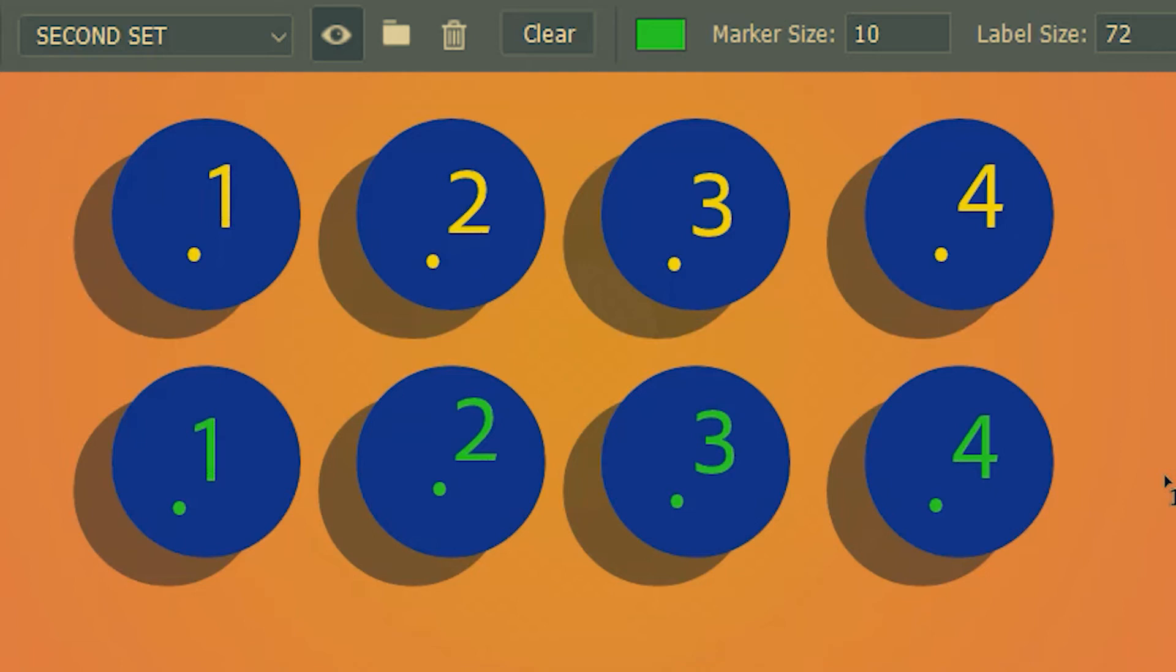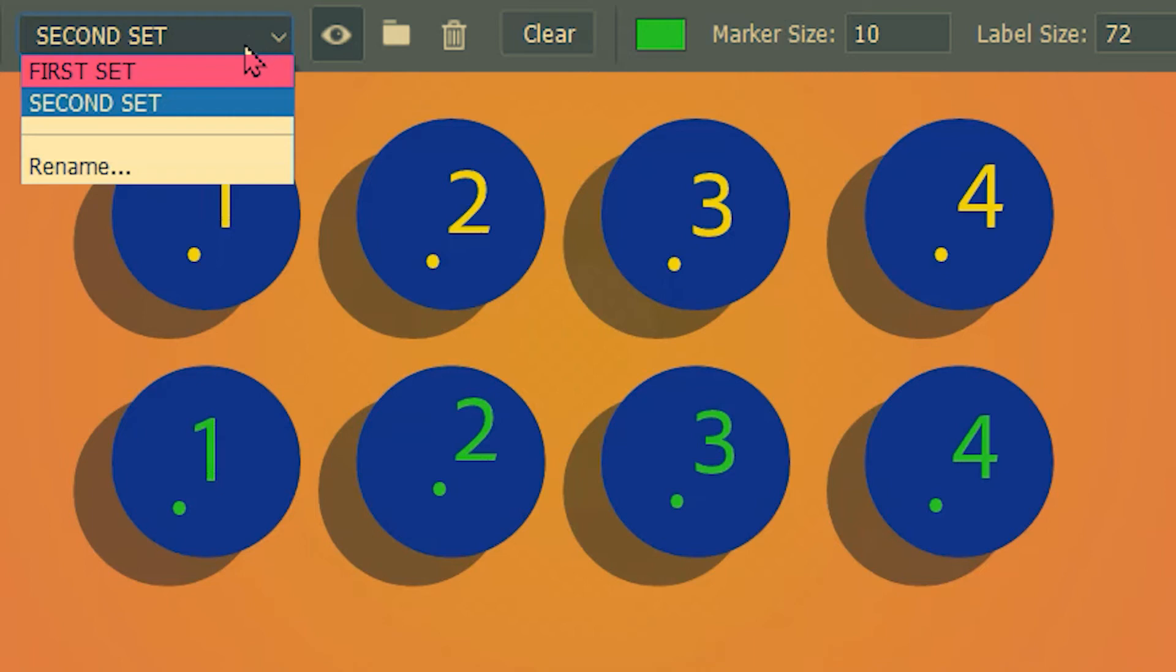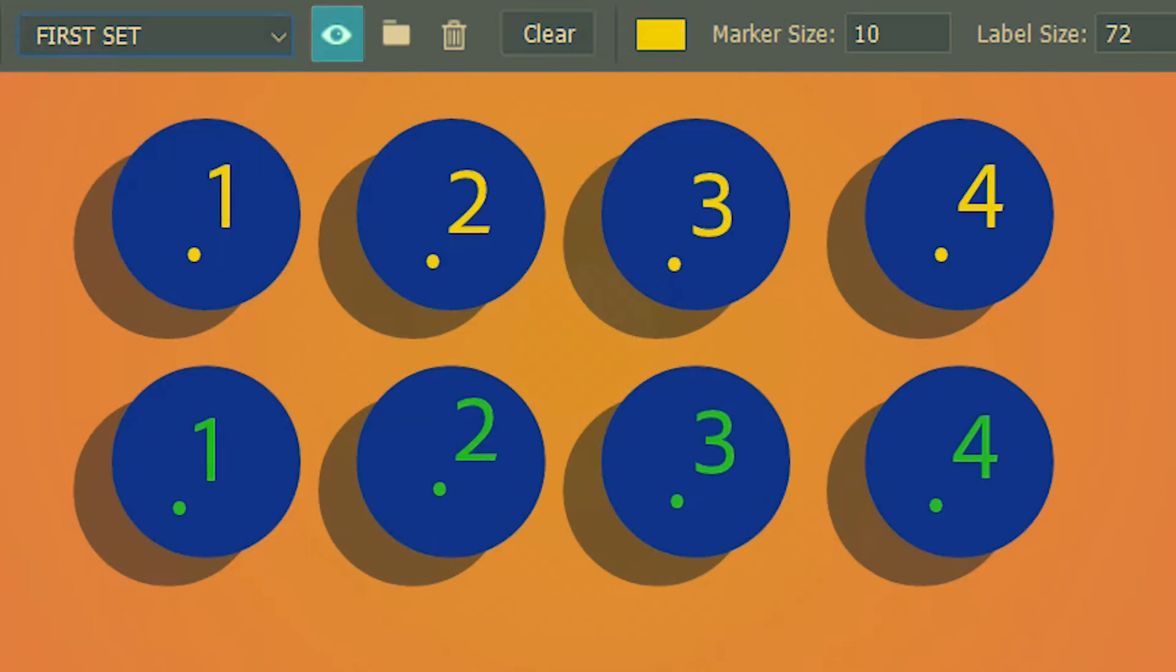Suppose you want to hide the numbers of the top row. Since they belong to the first set I'm going to select the first set. Then I'm going to click on this icon to hide them. Click again to bring them back. We can do the same for the second set.